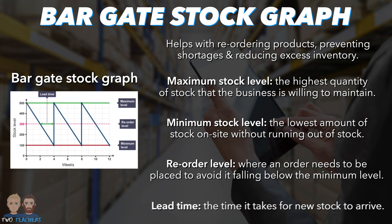Finally, there's Lead Time. Lead Time is the duration it takes for new stock to arrive — in this case, two weeks. Understanding Lead Time is crucial because a reliable supply chain with predictable lead times ensures that a business's stock never dips below the minimum level, allowing the business to continue fulfilling orders while waiting for new stock to arrive.